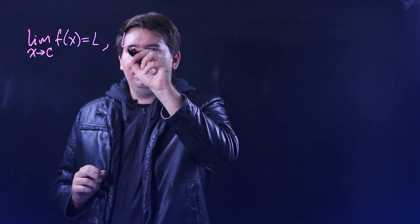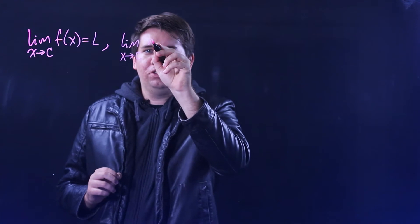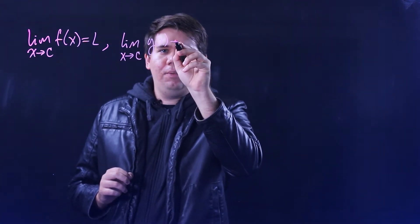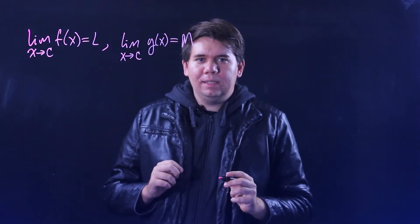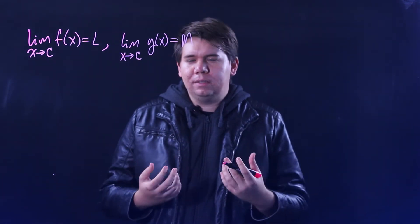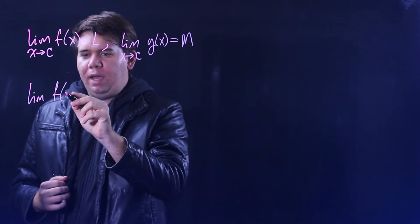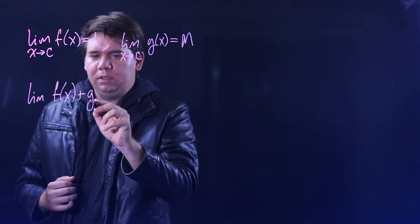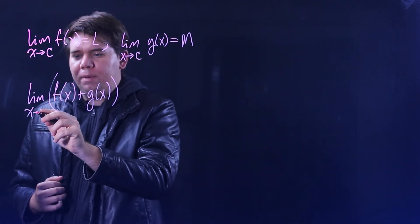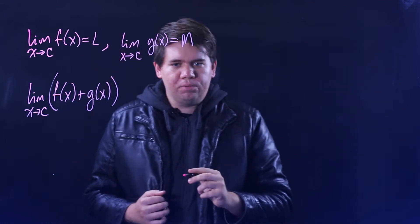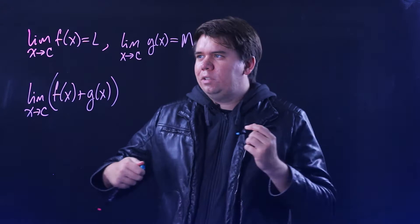And let's say we also know the limit of some other function G of X as X approaches C, and we know its limit is M. Then the first limit law is a way to make sense of what happens when you have the limit of F plus G — you combine these functions — what would that limit be as X approaches C?